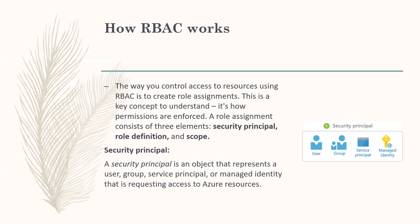How does RBAC work? The way you control access to resources using RBAC is to create a role assignment. This is a key concept to understand — it's how permissions are enforced. A role assignment consists of three elements: security principal, role definition, and scope. We will talk about all three of these elements.